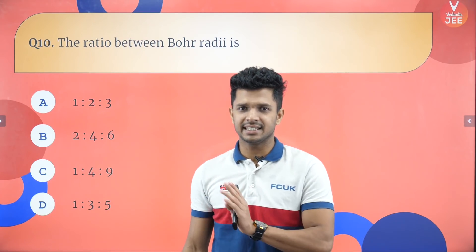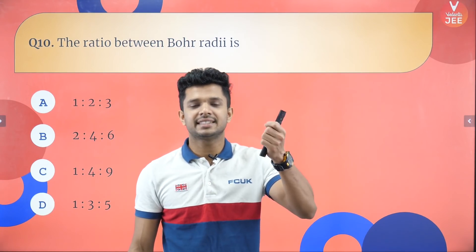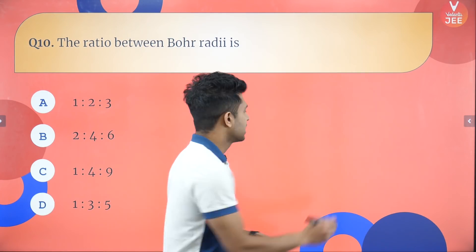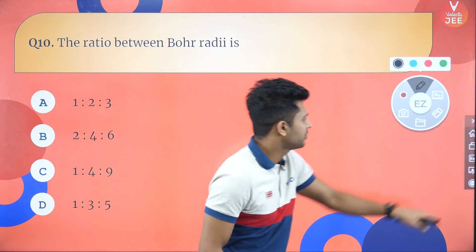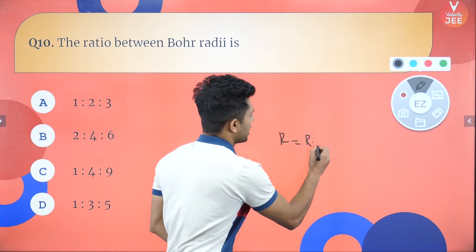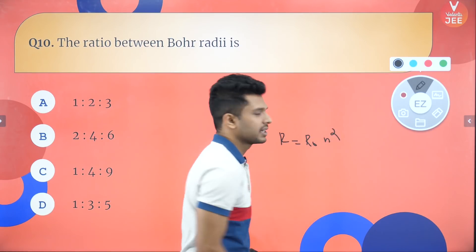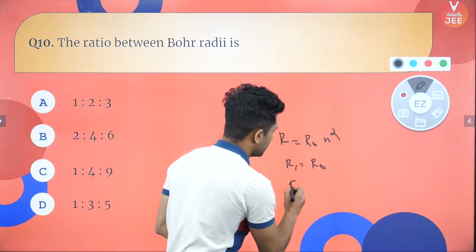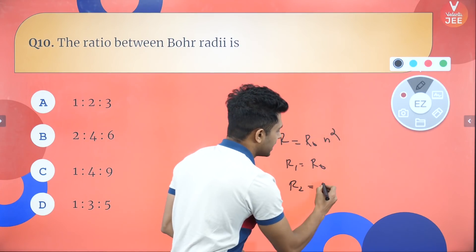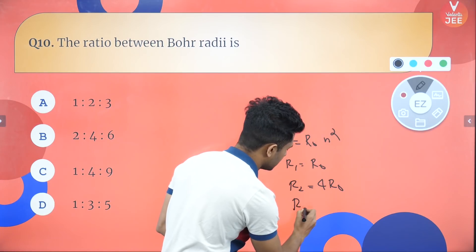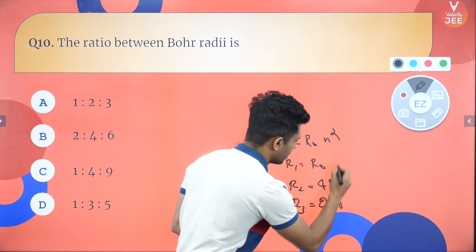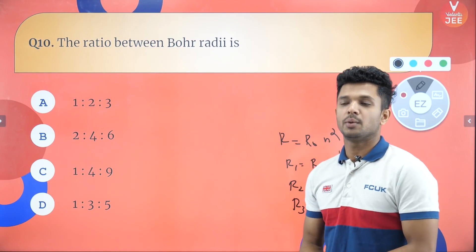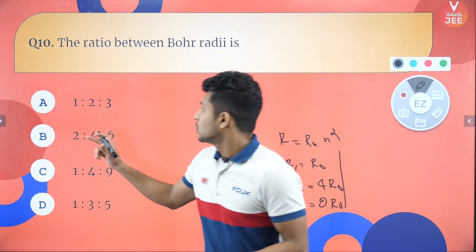What is the ratio of Bohr's radii for the first, second, and third orbits? The radius of the nth orbit is r = r₀ · n². So: r₁ = r₀ (n=1), r₂ = 4r₀ (n=2), r₃ = 9r₀ (n=3). The ratio of radii is 1 : 4 : 9, which is option C.